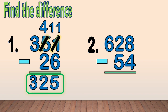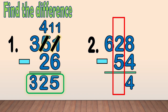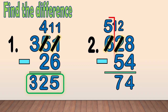Number two: 628 minus 54. First, we subtract the ones: eight minus four equals four. Next, we subtract the tens: two minus five — we cannot subtract five from two, so we regroup one hundred from six. We have ten tens plus two equals twelve tens. We cross out the two and write twelve at the top. Now we only have five hundreds — we cross out the six and write five at the top. Next, we subtract the tens: twelve minus five equals seven. Bring down the hundreds digit five. Our final answer is 574.